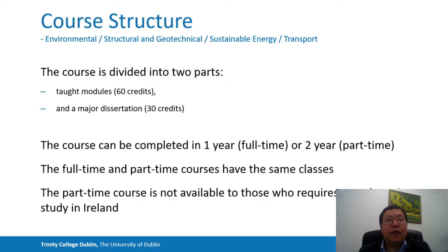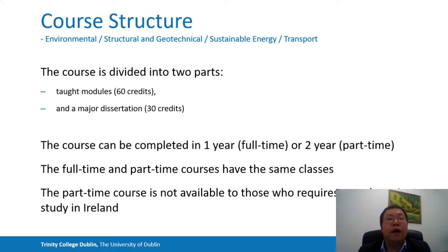This is a 90-credit postgraduate course. The course is divided into two parts: 12 modules which account for 60 credits, and a major dissertation which accounts for 30 credits. The course can be completed in one-year full-time or two-year part-time. The full-time and part-time course have the same classes. The part-time course is not available to those who require a student visa to study in Ireland.